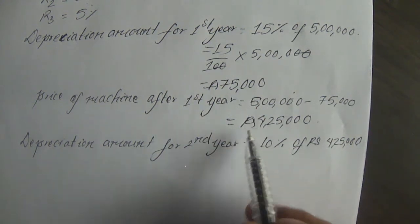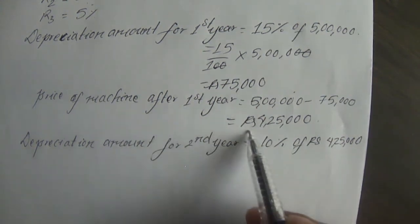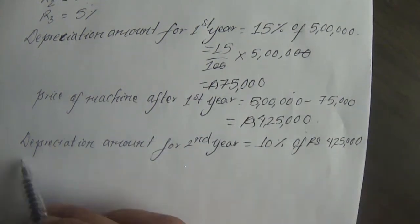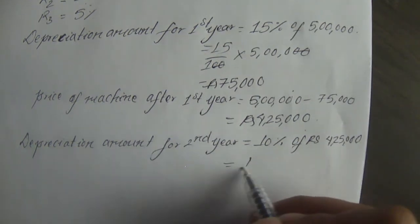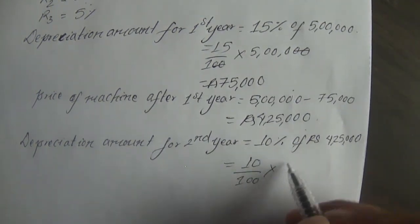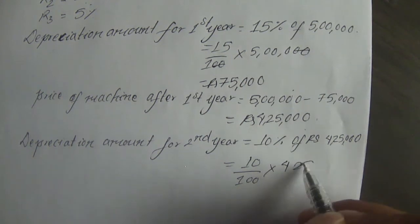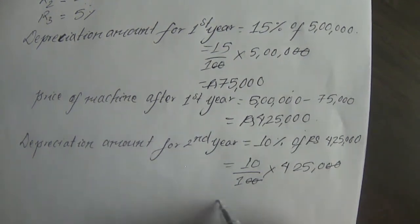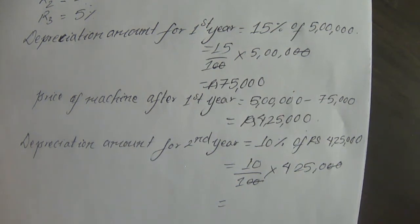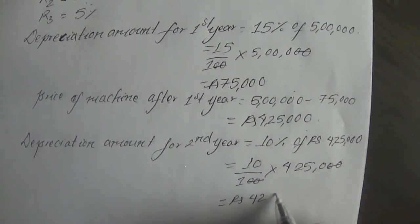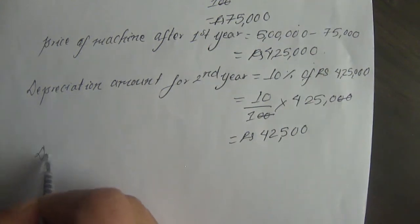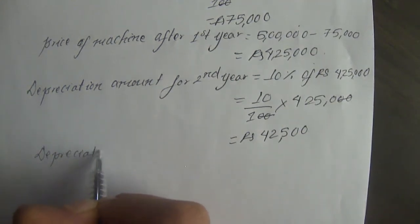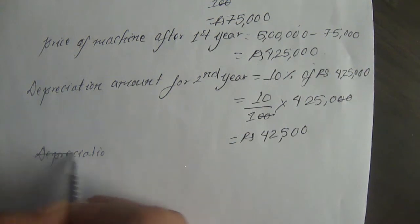From the first year, the price of the machine is Rs. 4,25,000. So 10% of Rs. 4,25,000 equals Rs. 42,500. This is the depreciation amount after the second year.